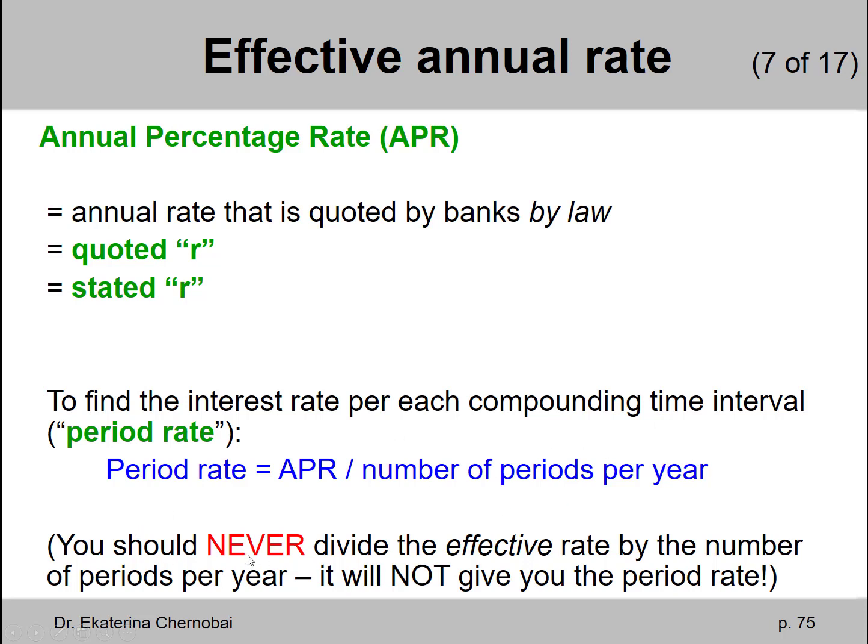You should never divide the effective rate by the number of periods per year. It will give you a slightly higher number than the correct interest earned over each compounding interval.